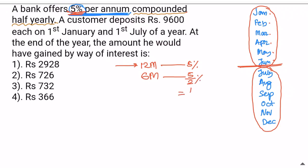5 by 2% is 1 by 40. The rate is 5 by 2%, which equals 1 by 40. Then July to December, the rate is also 5 by 2%, which is 1 by 40. On the 1st January and 1st July, that is the deposit date — they start to pay for the price.